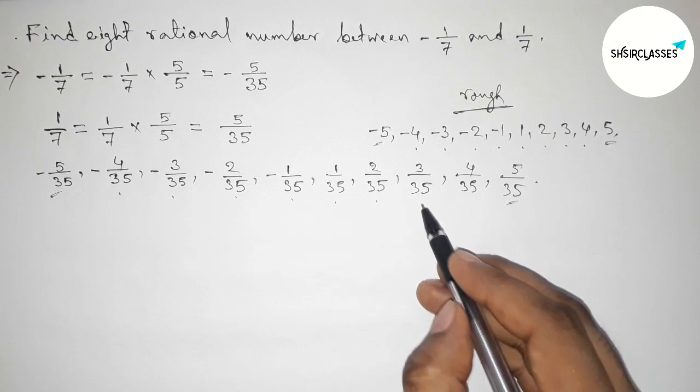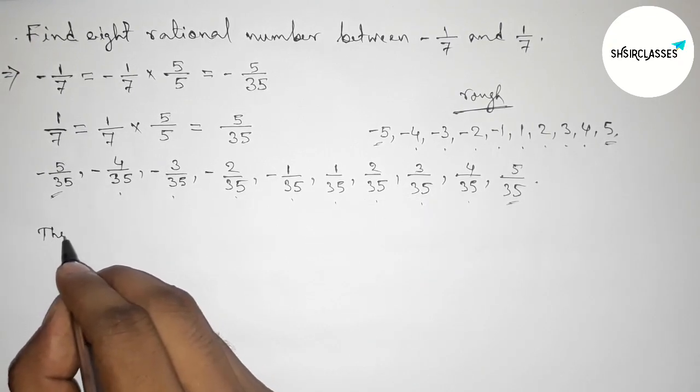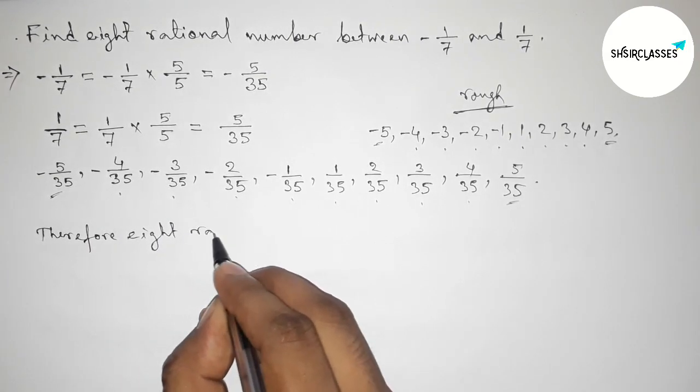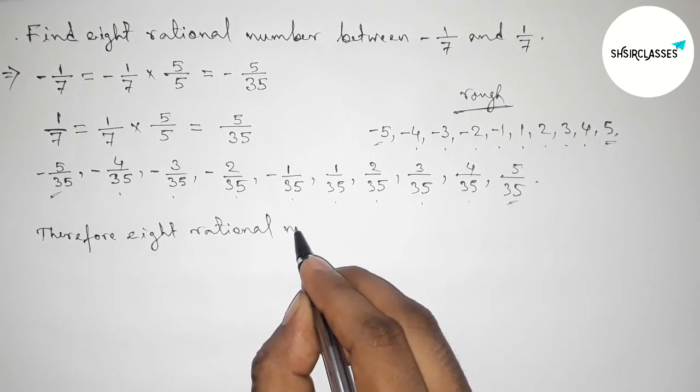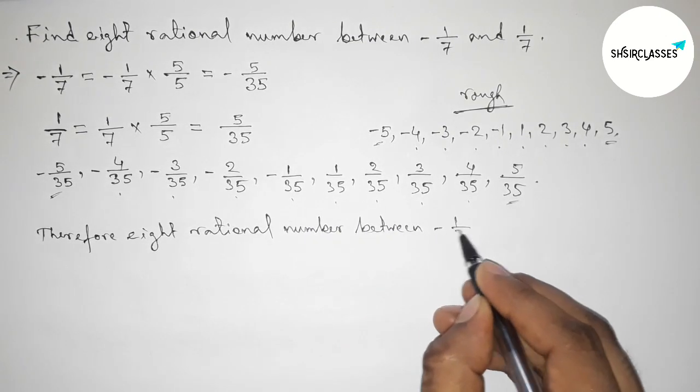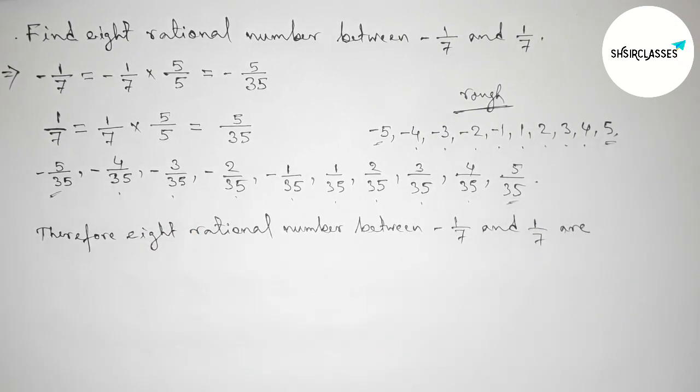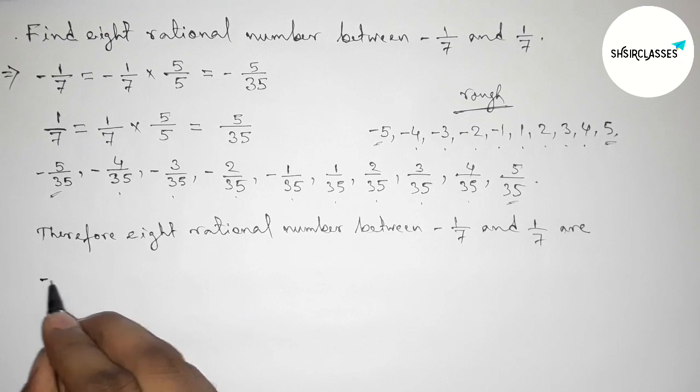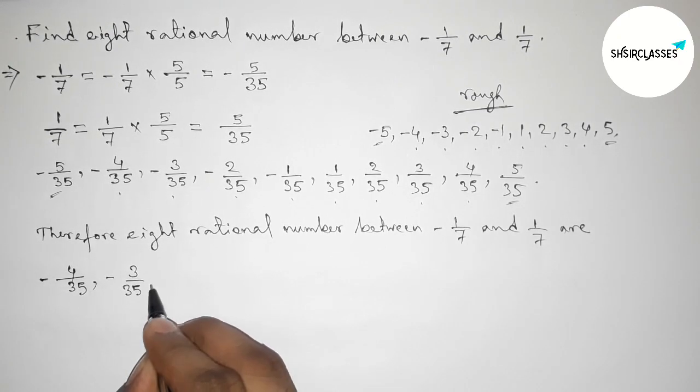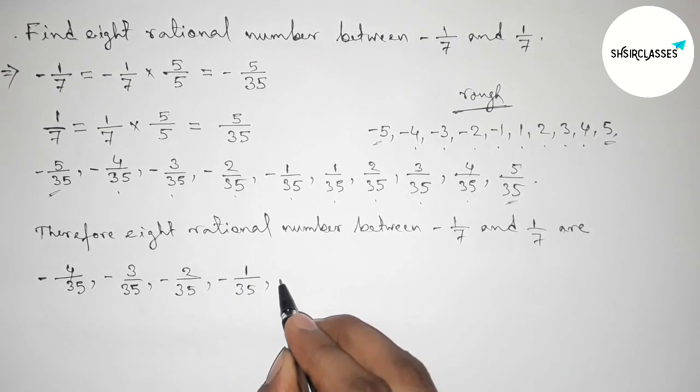get here 8 rational numbers. So here, the required 8 rational numbers. Okay, so here the first one is -4/35, then -3/35, -2/35, -1/35,